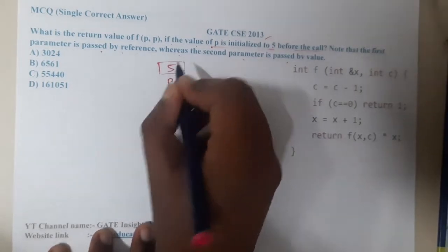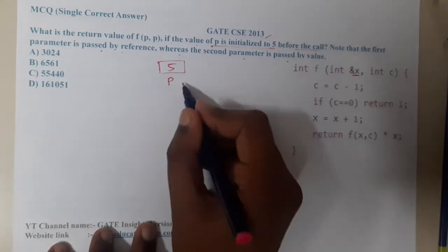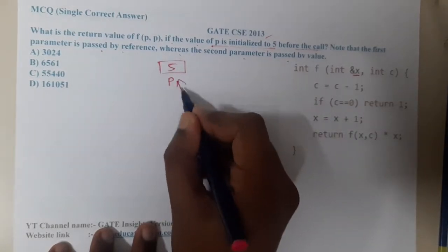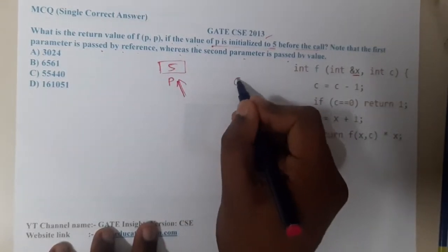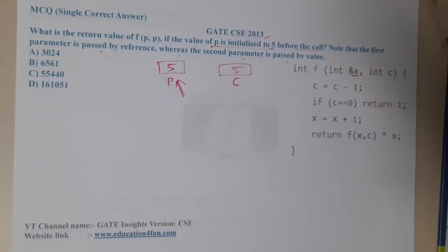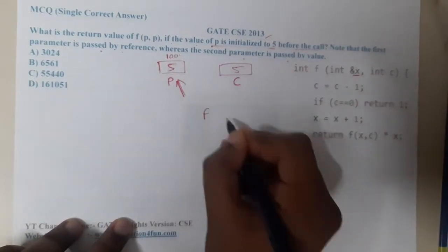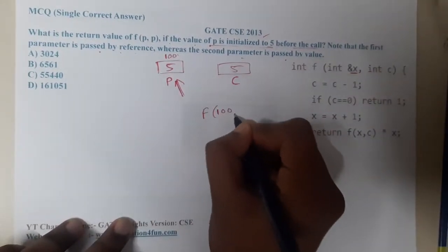We are having p storing the value 5. The first value in the function f is a pointer to this location, and the second one is just a normal value, not a reference. Let us start calling. Let us give some addresses so f(100, 5).